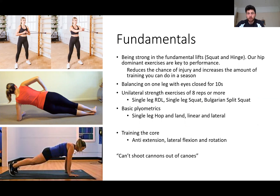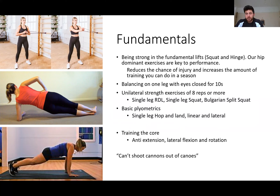The fundamentals are being strong in fundamental lifts — the squat and the hinge. Hip-dominant exercises are key to performance, as when the bat speed is away from the body, the hips and posterior chain need to be pulling hard to stop the back coming out of position. A good level of strength also reduces the chance of injury and increases the amount of training you can do in a season. Basic balancing is also important — if you can't balance on one leg with eyes closed for 10 seconds, you'll struggle to create power off one leg. We can use unilateral strength exercises of 8 reps or more — single leg RDL, squat, split squat — and then move to basic plyometrics: single leg hop and lands, linear and lateral.